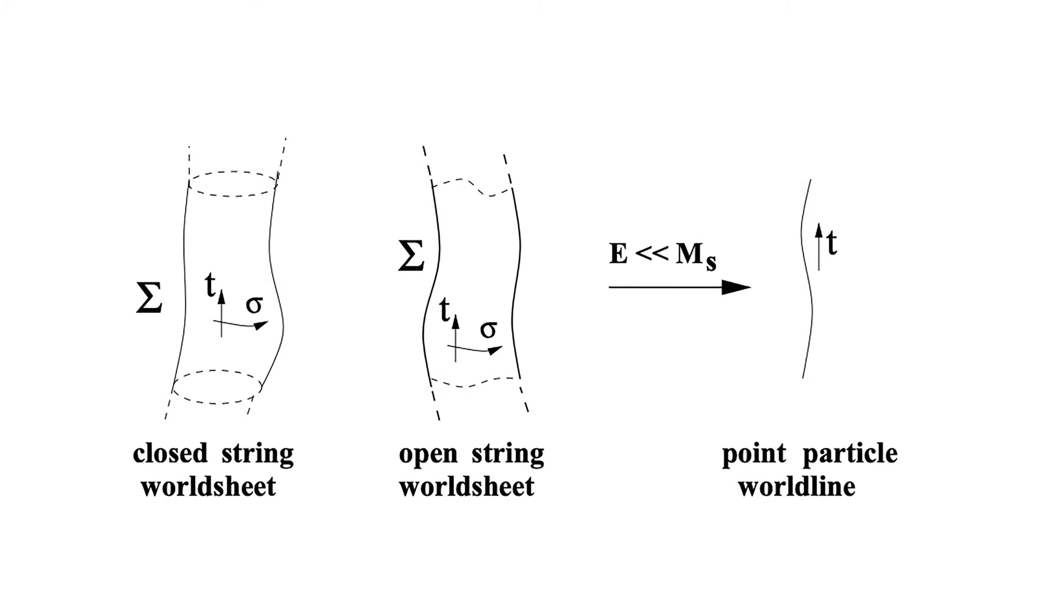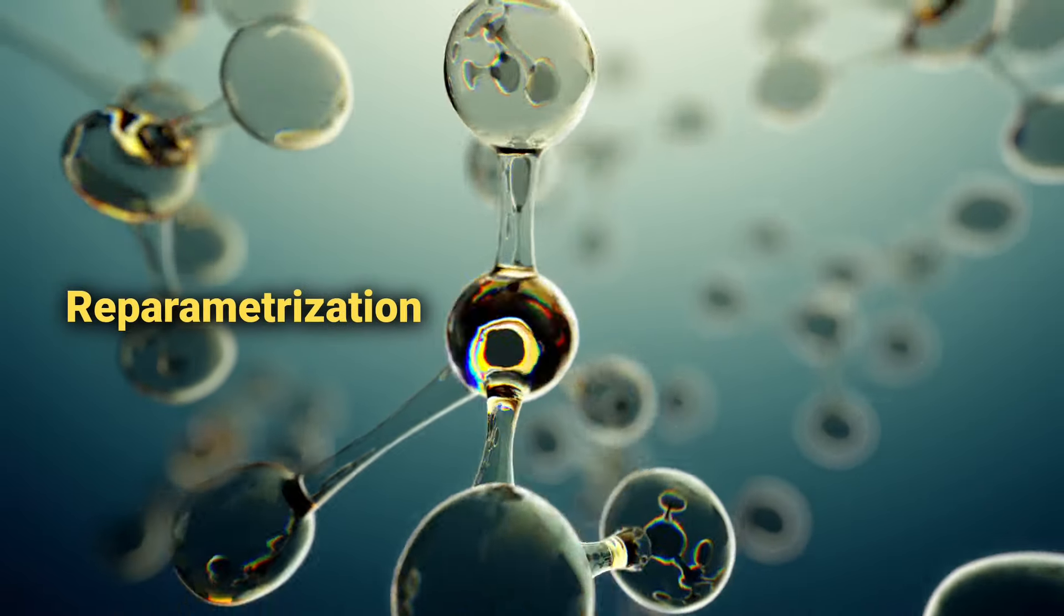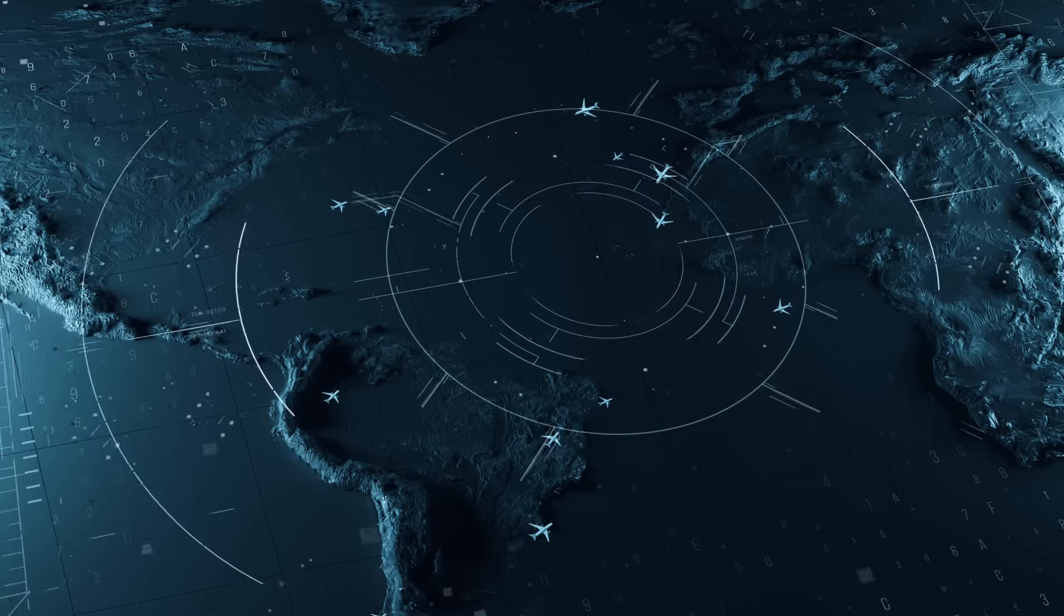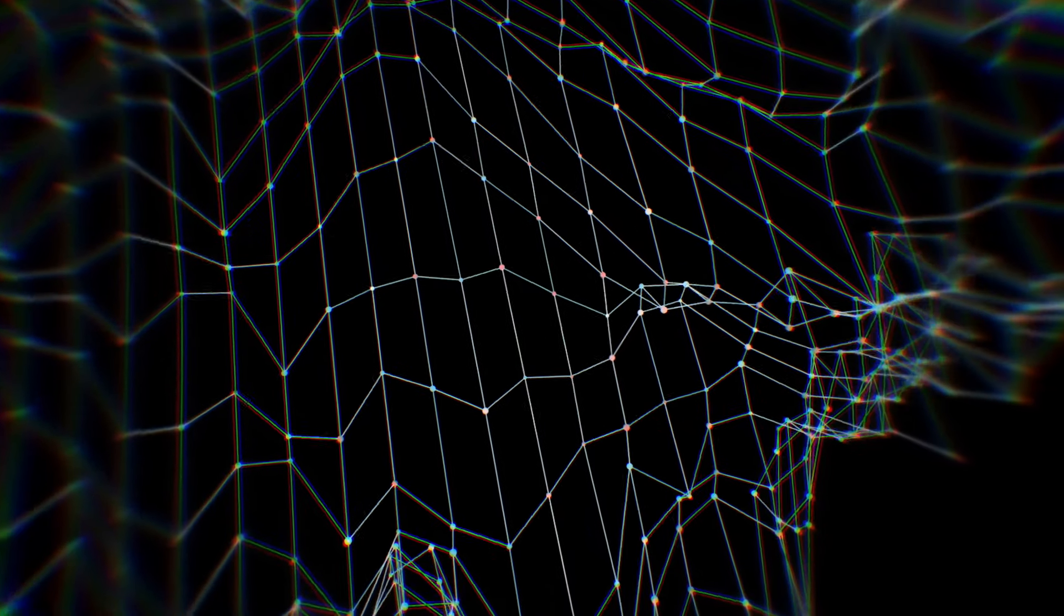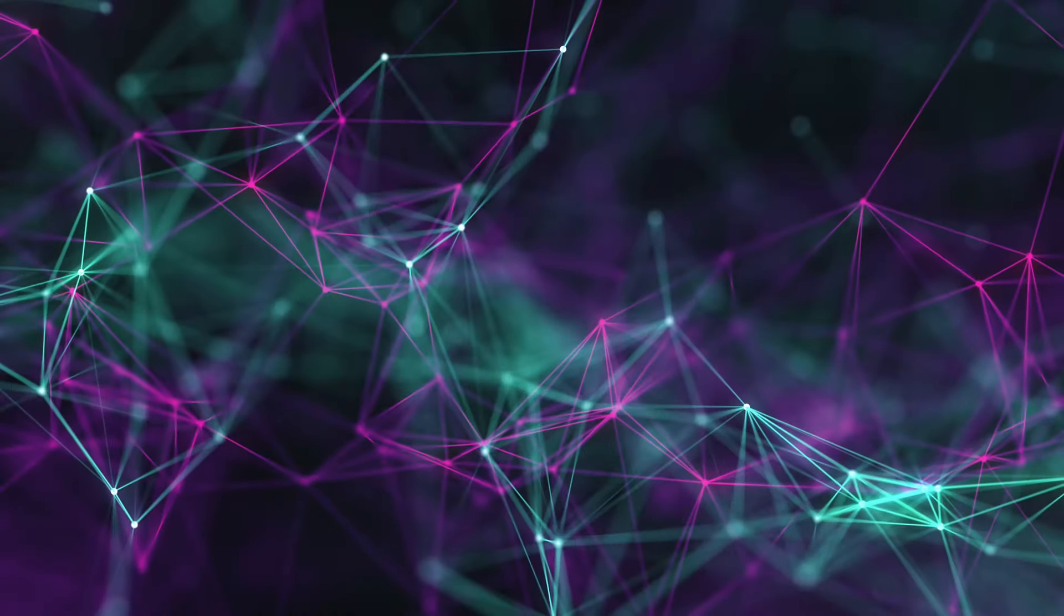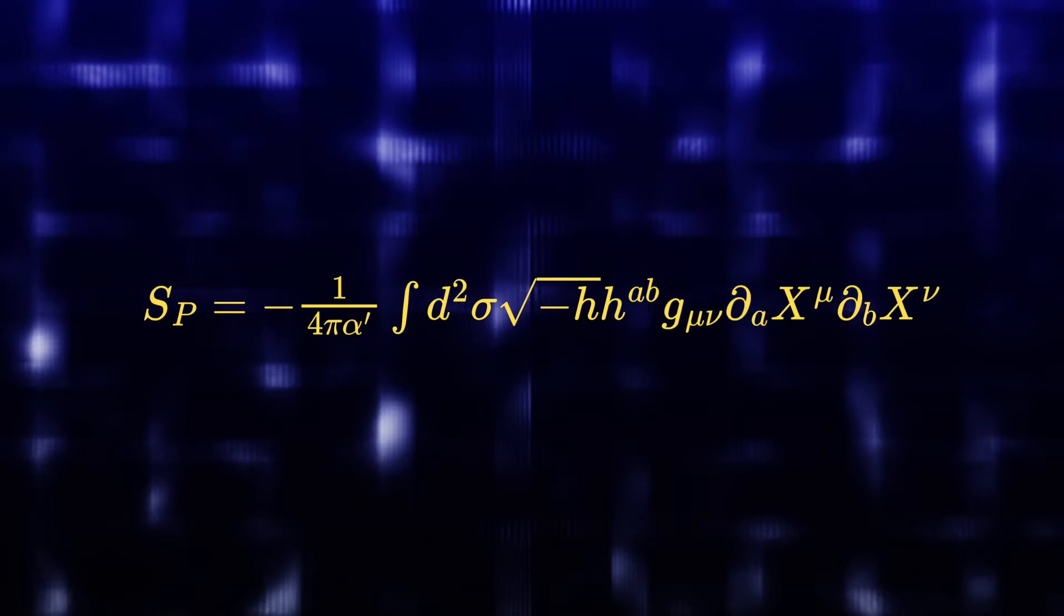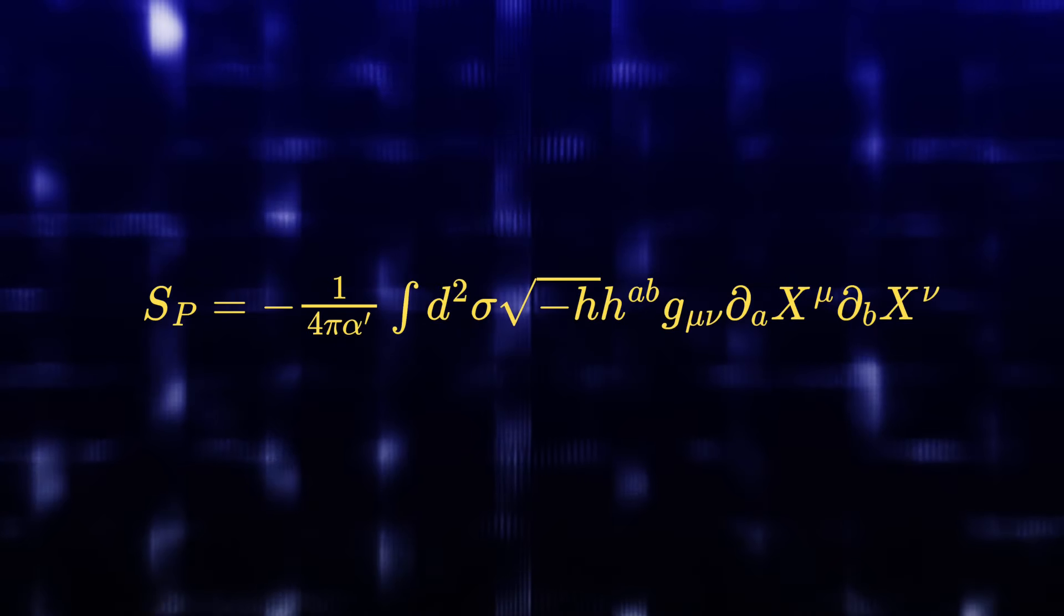The world sheet of a string is the two-dimensional surface that a string sweeps out in space-time shown on screen here. The basic symmetries of the world sheet include re-parameterization invariance, and then something called Weyl symmetry. Be careful not to call it vile symmetry. If you do, string theorists will respect you exactly 3% less. Reparameterization invariance means you can choose whichever coordinates you like on the world sheet, and it won't affect the physical predictions. Weyl symmetry is the rescaling of the world sheet metric, which is a feature in conformal field theories, or CFTs. CFTs are something that we'll explore next. Recall the Polyakov action here. This little guy is invariant under both reparameterization and Weyl transformations.